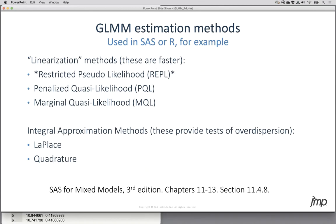If you need to try other algorithms or want more information about this fitting method, you can refer to the SAS for Mixed Models book, third edition — chapters 11 through 13 cover generalized linear mixed models. Chapter 11 covers binomial situations, Chapter 12 covers Poisson count situations, Chapter 13 covers more complex models not yet possible in this add-in. Estimation methods are in section 11.4.8. We're using restricted pseudo-likelihood, one of the linearization methods. There are also integral approximation methods — Laplace or quadrature — which are good for testing over-dispersion, and we'll talk about that more in a moment.